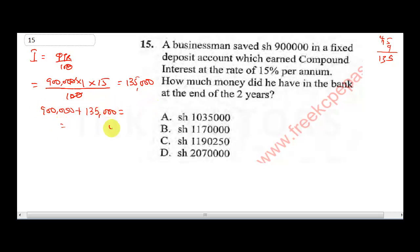So this is going to be 1,035,000. This is at end of first year. So for the second year, this now becomes our new capital. Our interest will be 1,035,000 times 1 times 15 all over 100. Double zero cancel the double zero, so we have 10,350 multiplied by 15.